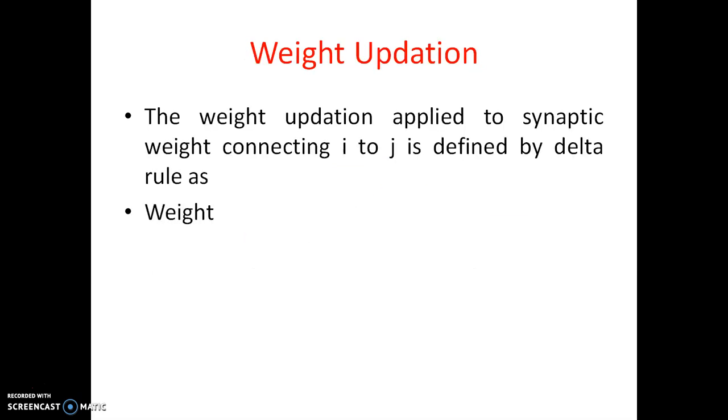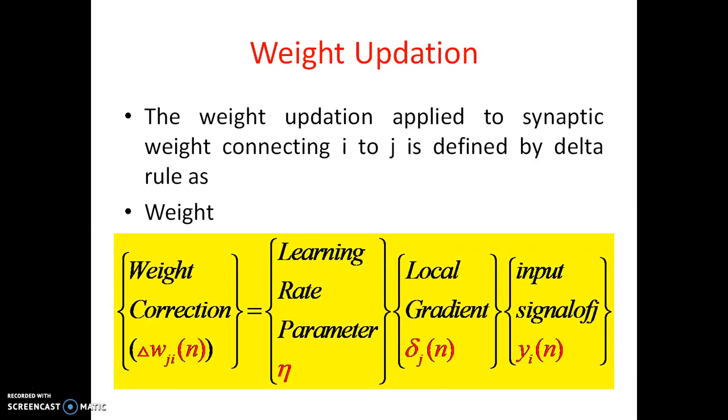And the weight upgradation, so the weight upgradation is applied to synaptic weight from the weight connecting from i to j is defined by the delta rule obviously. Delta wji of N is equal to eta delta j of N yi of N. That means local rate parameter into local gradient into input signal of j.